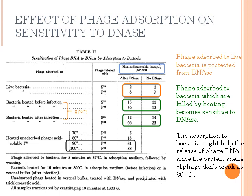Table 2 shows the effect of phage adsorption on sensitivity to DNase. There are four treatments: phage adsorbed to live bacteria; bacteria heated before or after infection; and heated unabsorbed phage. Phage was labeled with P32 and S35, co-cultured with bacteria in adsorption media for 5 minutes, then washed and centrifuged. The low percentage of P32 in non-sedimented fractions shows that phage adsorbed to live bacteria is protected from DNase. After heating unabsorbed phage at different temperatures, only very high temperatures above 90 degrees caused the release of phage DNA.